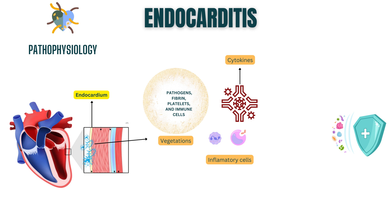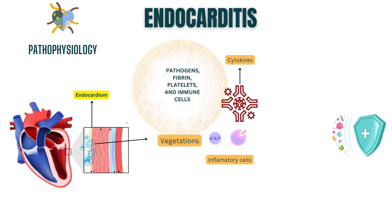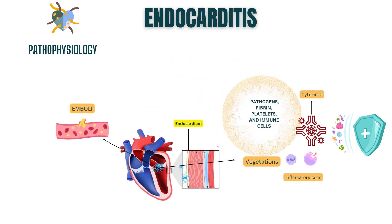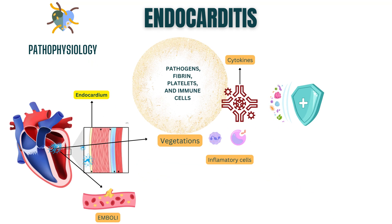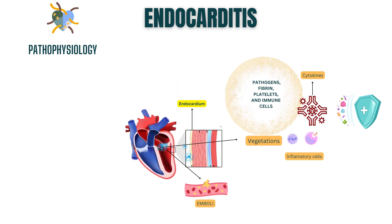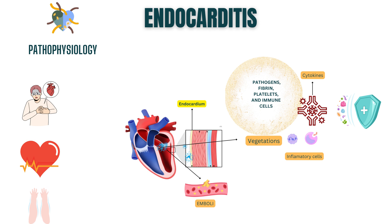With time, the relentless inflammation takes its toll. The vegetations grow larger, invading the delicate heart valves. This can lead to valvular destruction, compromising their function, and disrupting the heart's normal flow dynamics. Fragments of the infected vegetation can break loose, becoming silent intruders known as emboli. These emboli can journey through the bloodstream, reaching distant organs and causing blockages. Endocarditis can wreak havoc on the cardiovascular system, leading to heart failure, arrhythmias, septicemia, and abscess formation.